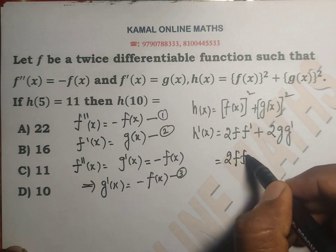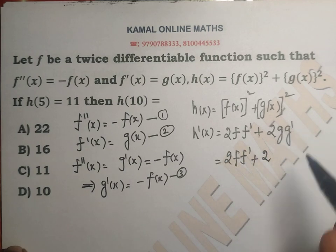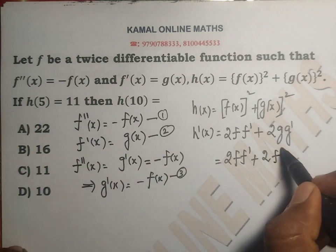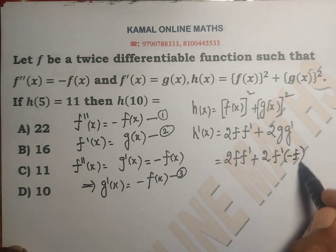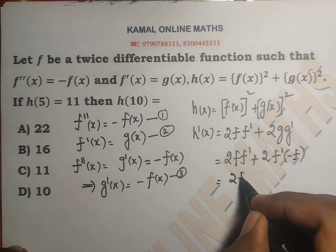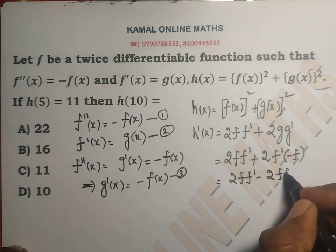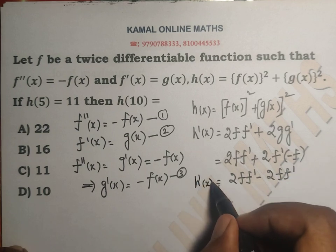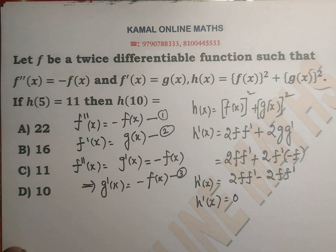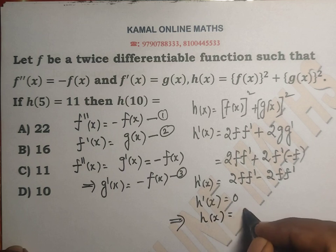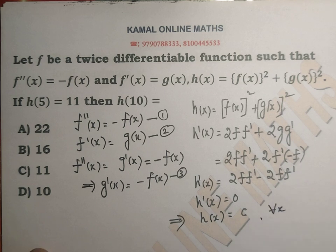So h'(x) = 2f·f' + 2g·g'. Replacing f' with g and g' with -f using the given equations, this value becomes 2f·f' - 2f·f'. So h'(x) = 0. Integrating, h(x) equals some constant c. So h(x) is a constant function.